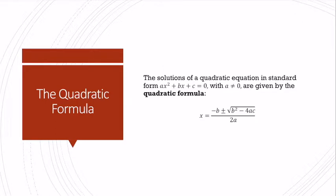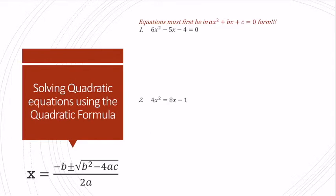It's important to note that this is something you will have to memorize. And b squared minus 4ac — we call this the discriminant — and it has some interesting properties we're going to talk about in just a minute.